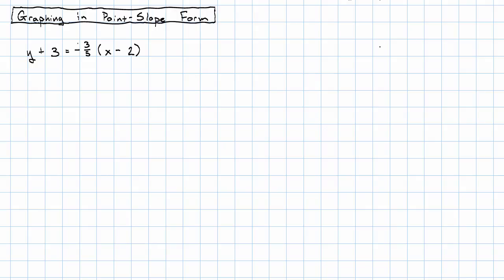Graphing an equation that's been given to us in point-slope form is very similar to graphing an equation in slope-intercept form, except that we first have to figure out what the point was. For example, let's say we're given the equation y plus 3 equals negative 3 fifths times x minus 2, and we want to graph this.